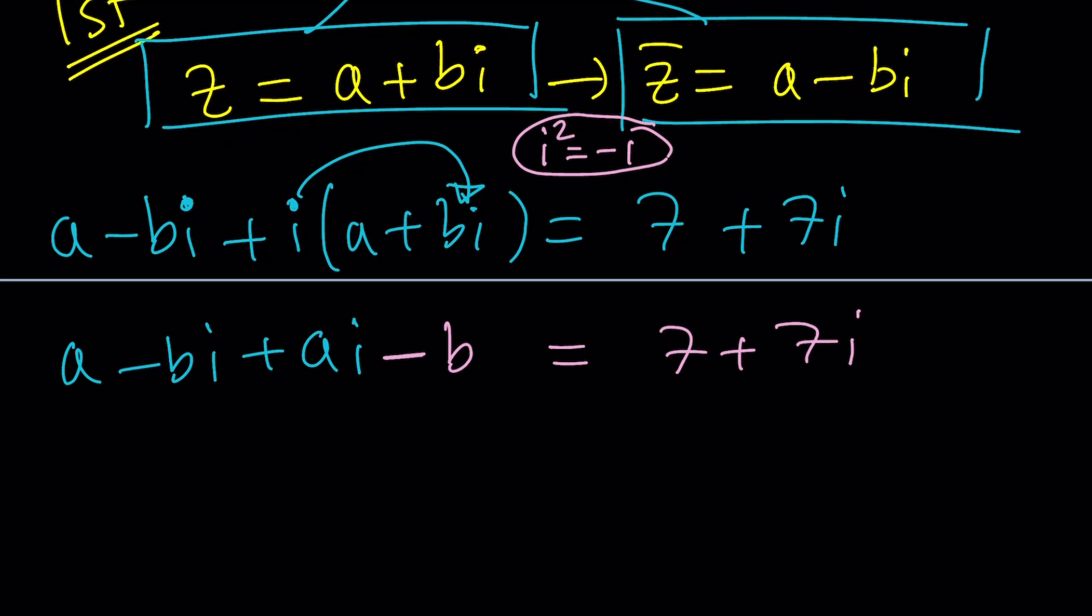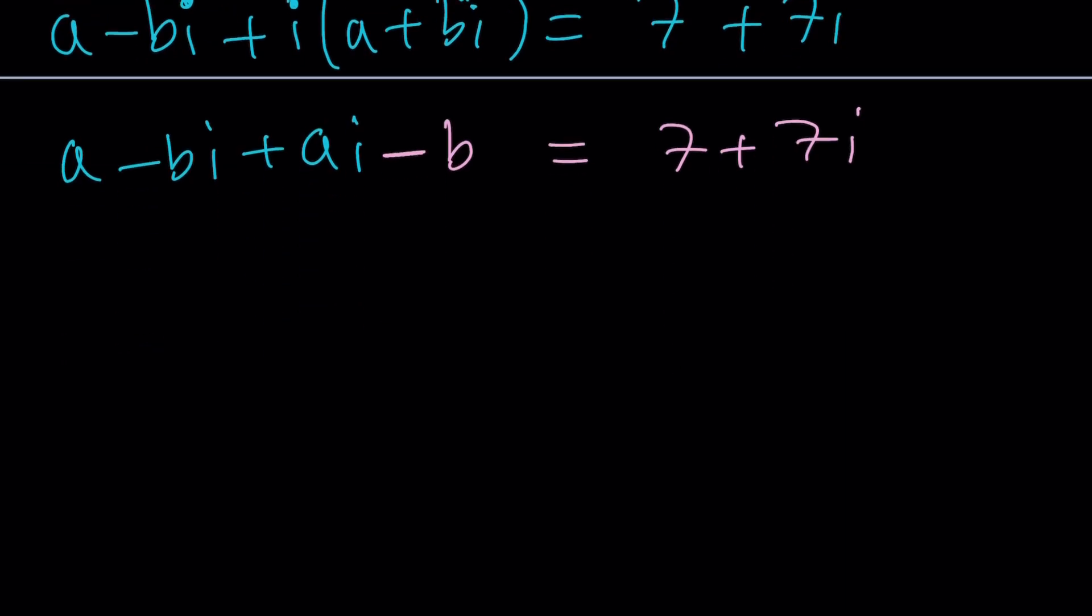Does this make sense? We need to put the real parts together. A and B are real, by the way. A minus B. And then A minus B multiplied by I equals 7 plus 7I. Now, looking at this, you could hopefully tell that A minus B is supposed to equal 7. Because we have a system. A minus B is 7, and A minus B is 7. Obviously, you don't need the second equation, but I just wanted to emphasize that it just verifies the first one. So A minus B equals 7.